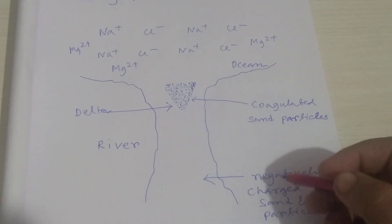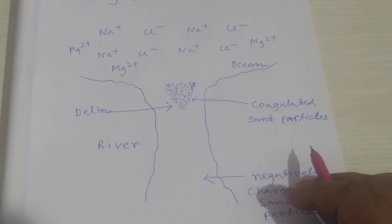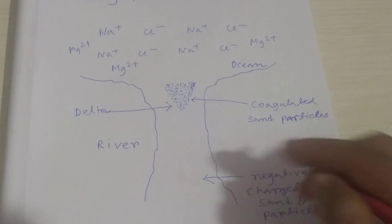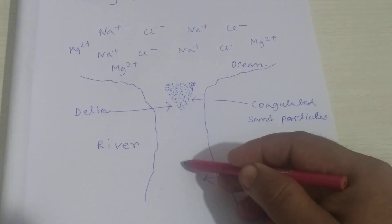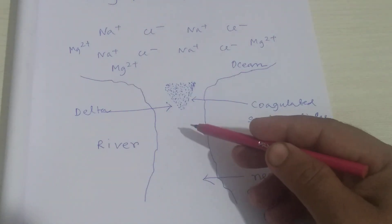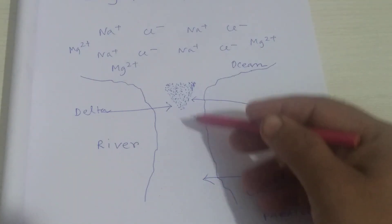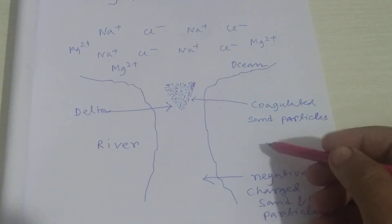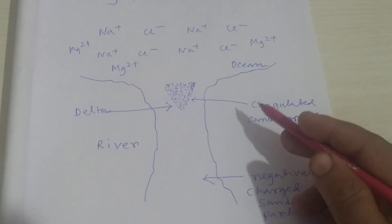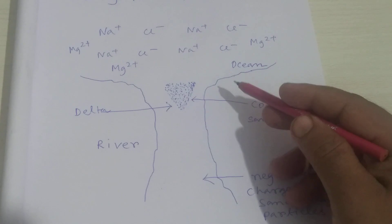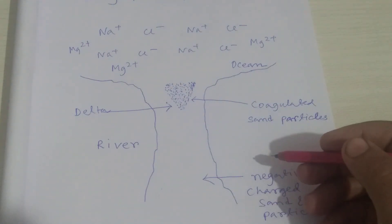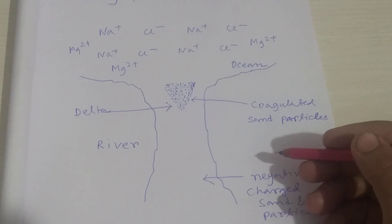The main reason is due to the coagulation of the sand and clay particles that are present in river water. They are coagulated at the meeting point of the ocean and river because the ocean water or seawater contains an electrolyte solution.